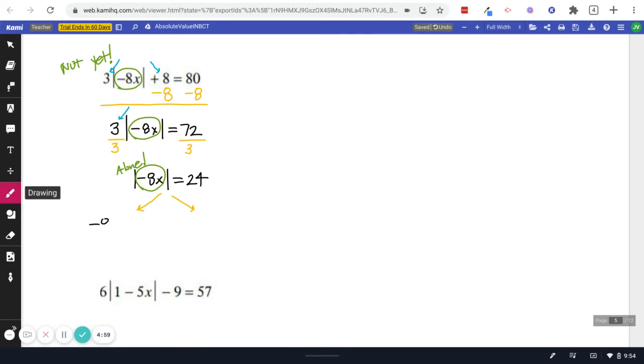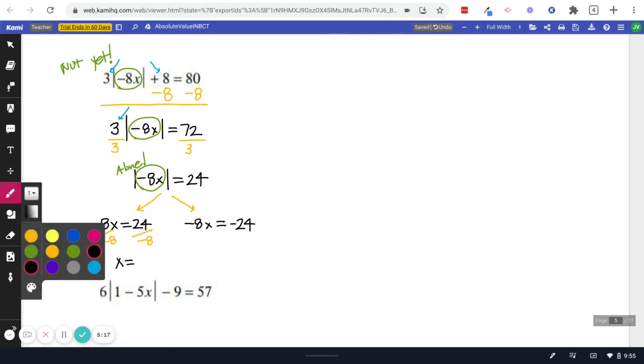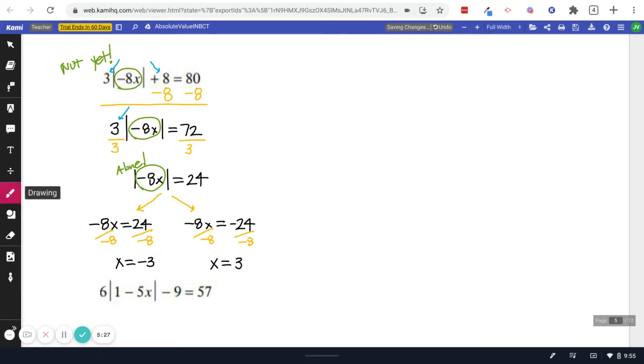That means we have a negative eight X equals positive 24. Negative eight X equals negative 24. Divide both sides by negative eight. X equals negative three. Divide both sides by negative eight. X equals positive three. Okay.